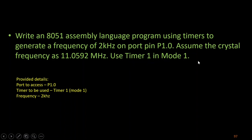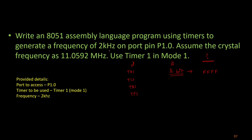The specification says to use Timer 1 and Mode 1. Since it is Timer 1, the registers we are going to use are TH1, TL1, TR1 to enable it, and TF1 to check the overflow. Mode 1 is the normal 16-bit timer/counter mode. We have to find the maximum count value so that the output frequency is 2 kilohertz.